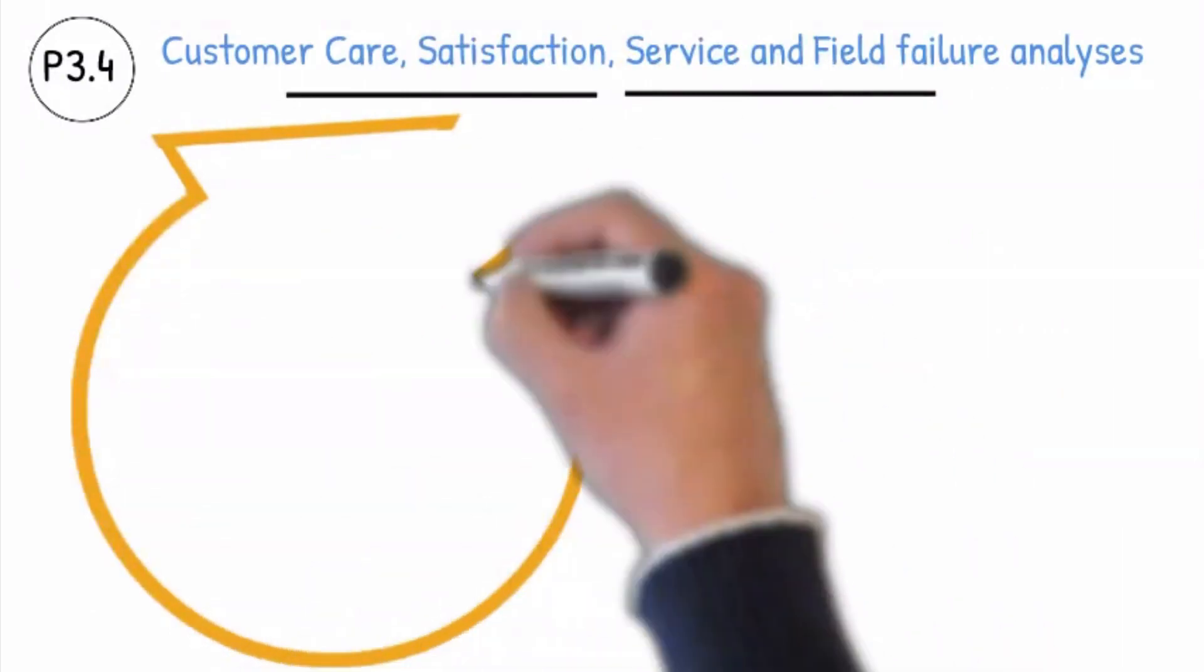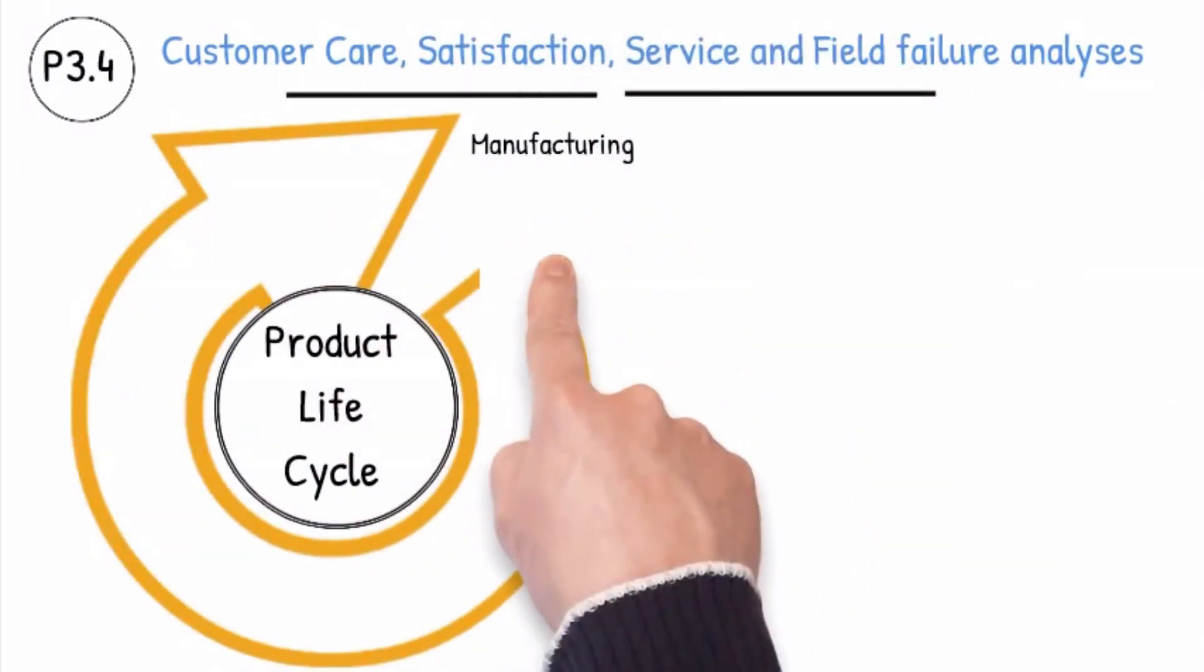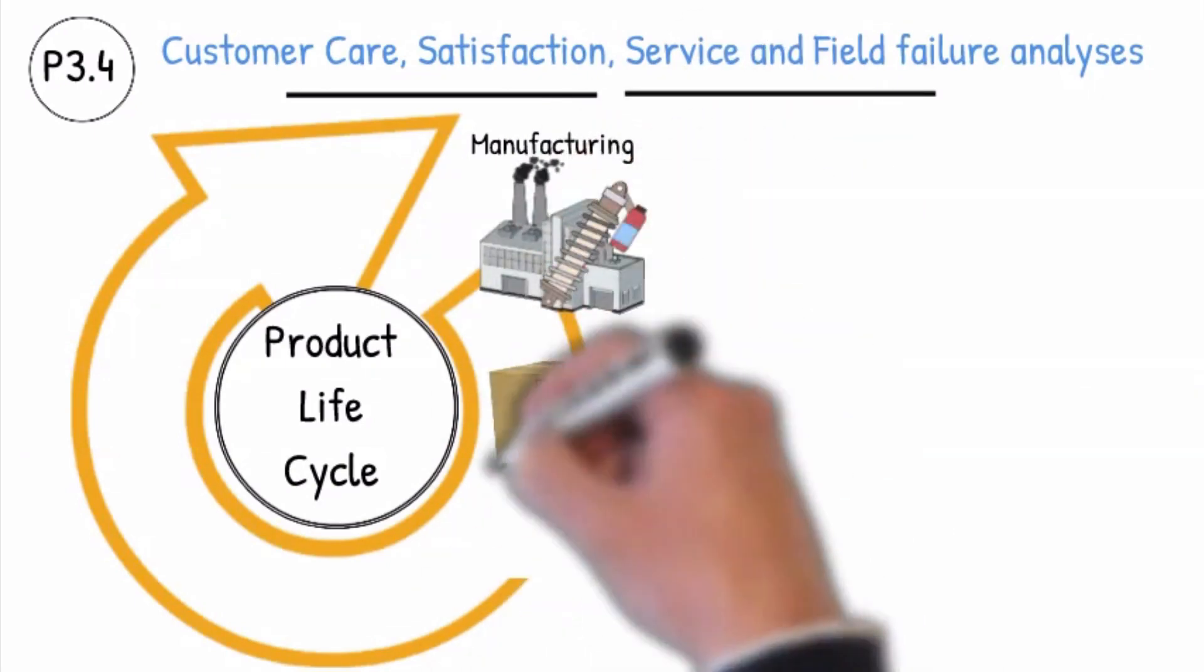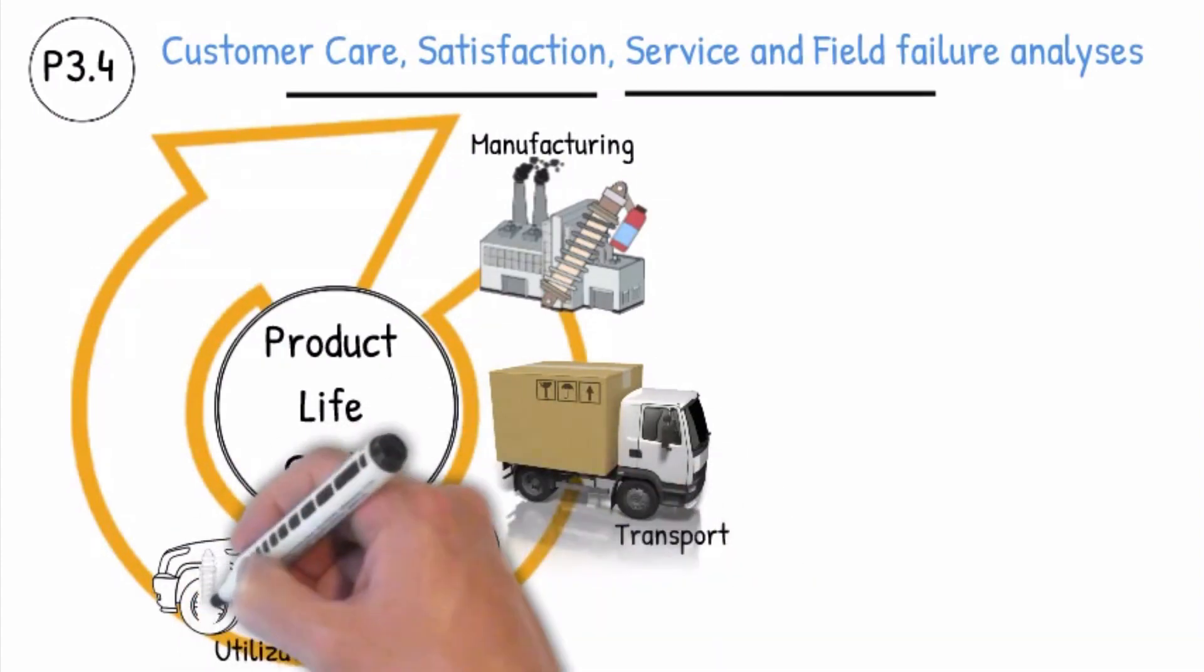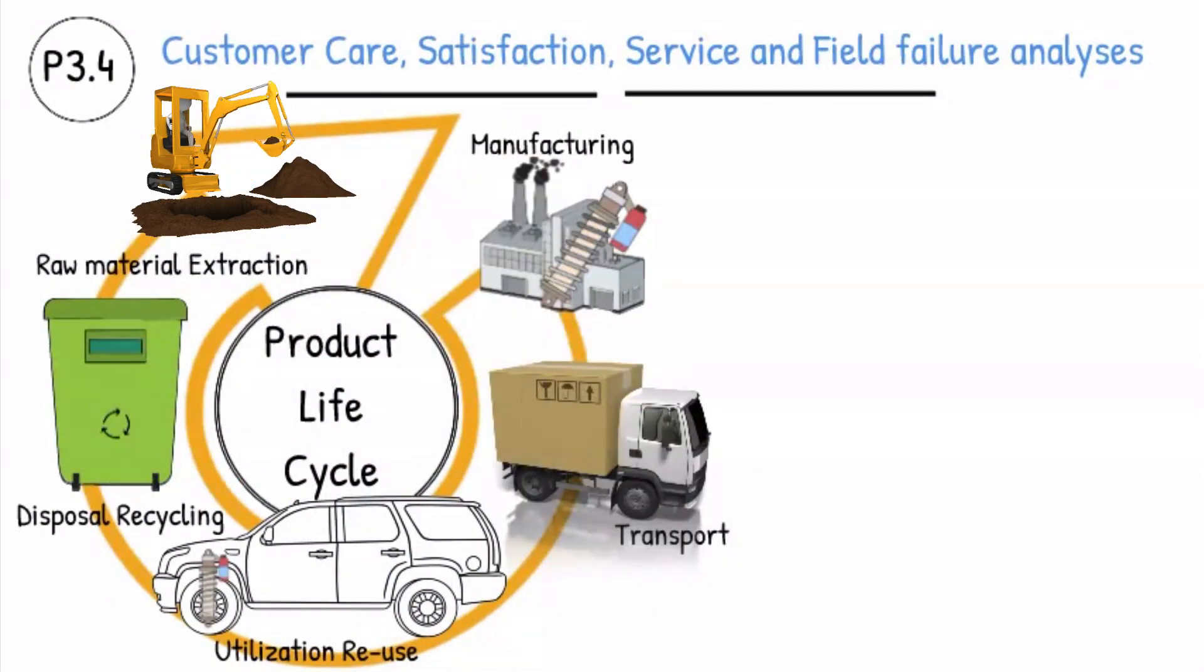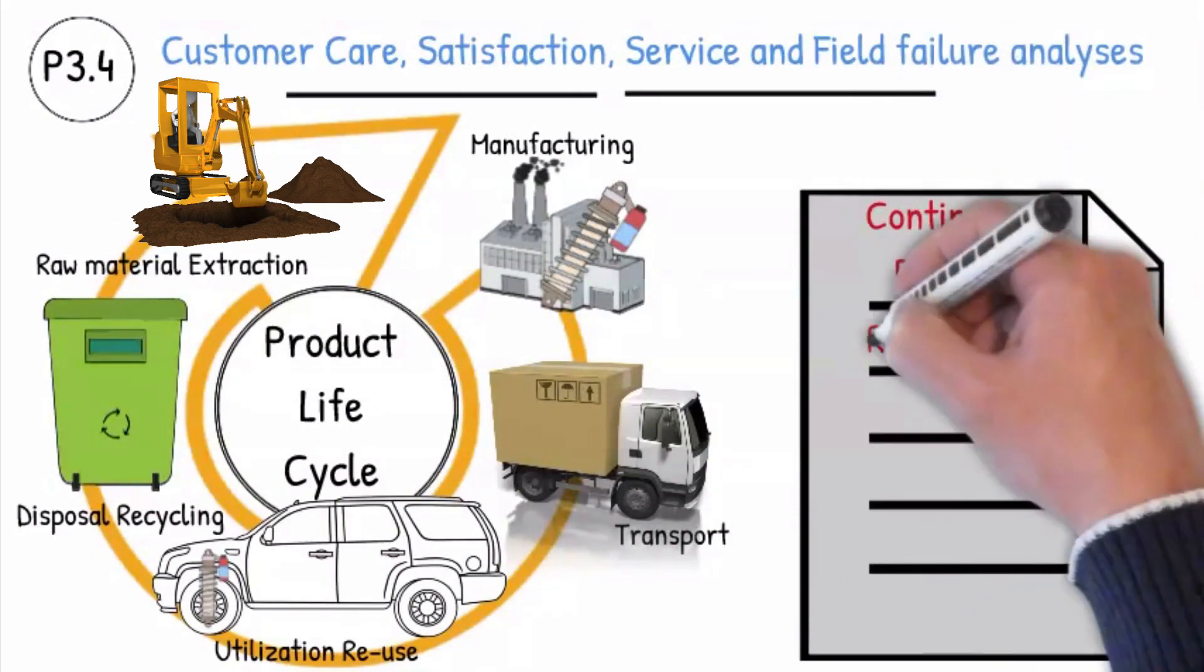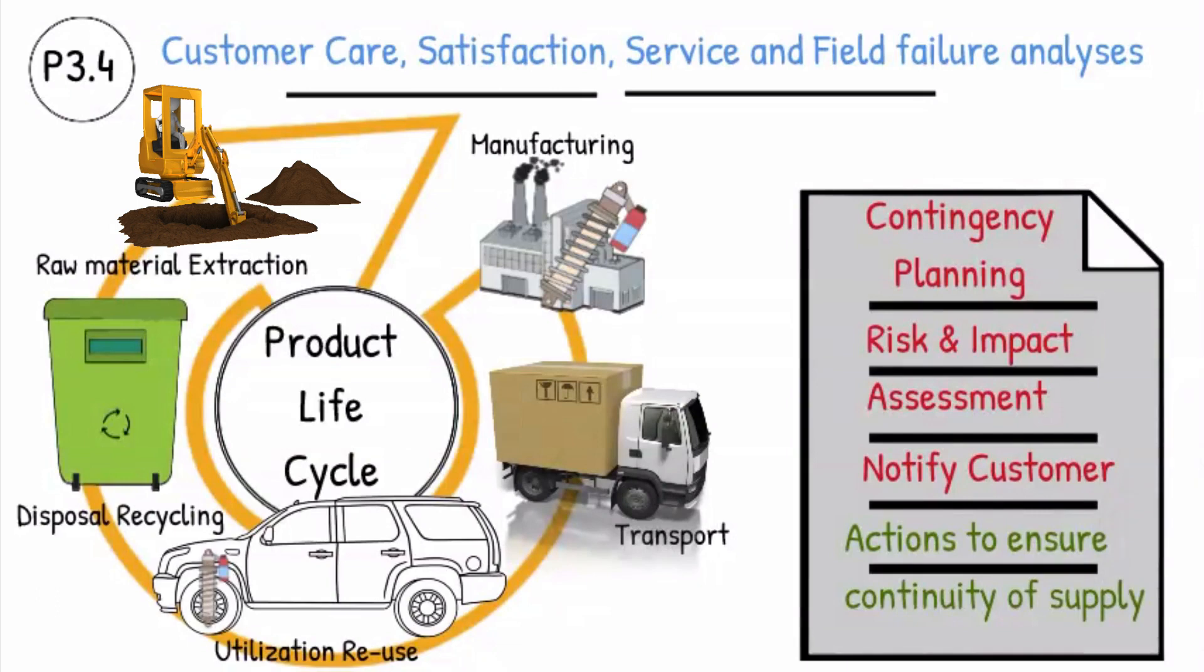The customer requirements for the supply of parts across the product lifecycle are taken into account in the planning. The process of managing the entire lifecycle of a product from inception, through engineering design and manufacture, to service and disposal of manufactured products. Concepts to continually ensure serious supply including a contingency plan to prevent or minimize the risk and impact to the customer are provided in the planning phase.